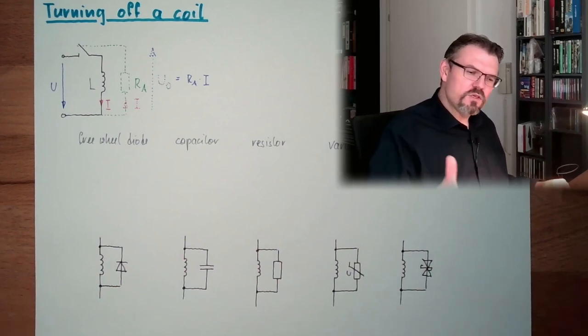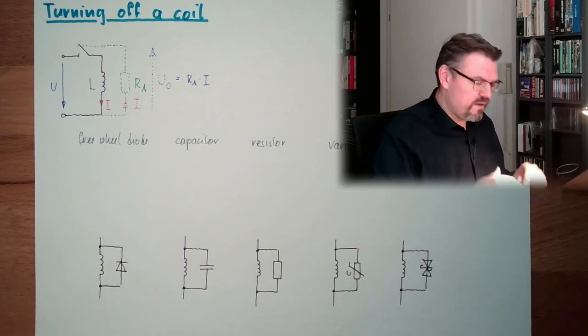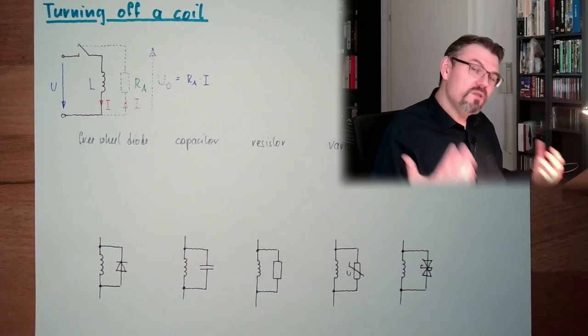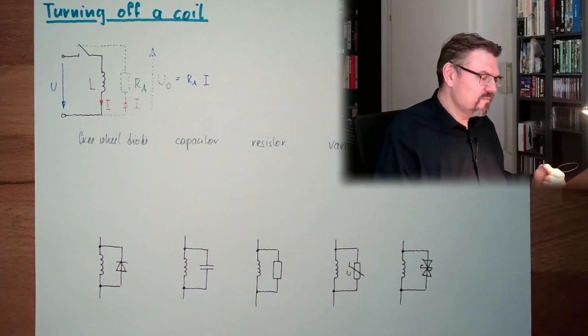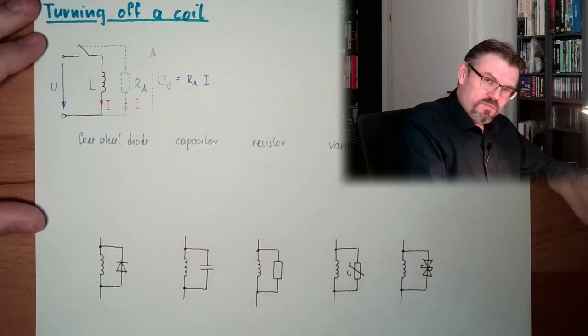Usually, the task is switching off with the coil smooth. And I want to show you different methods, here I have drawn them, how to deal with this.